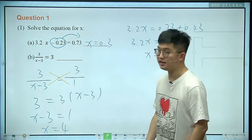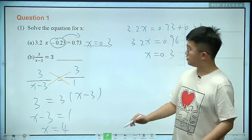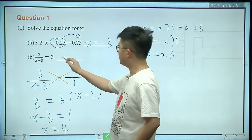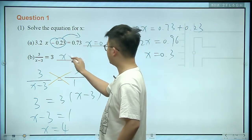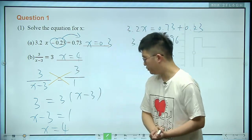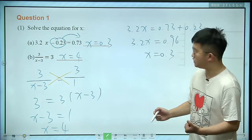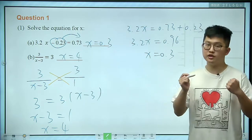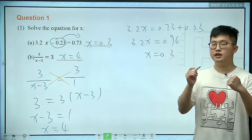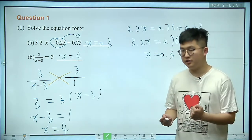We can cancel the 3 on both sides, and it will be x minus 3 equals 1, so x is 4. The solution for this equation is x equals 4. That's how we solve an equation.